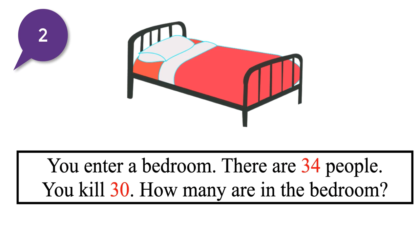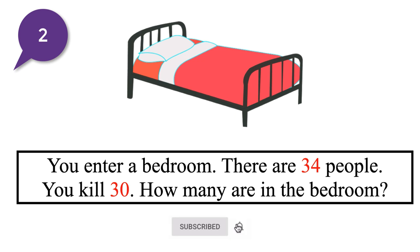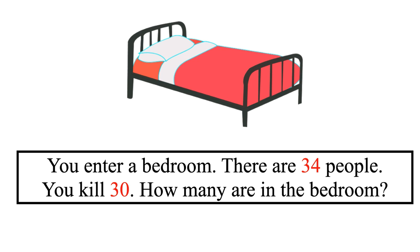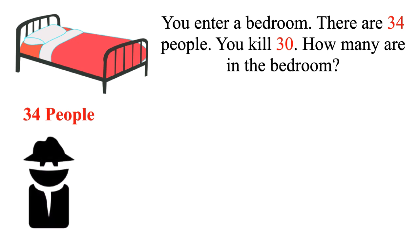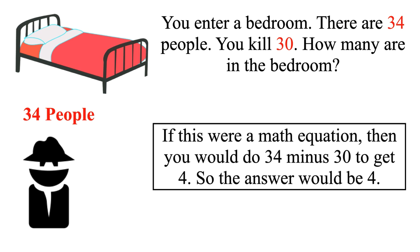You enter a bedroom — there are 34 people. You kill 30. How many are in the bedroom? If this were a math equation, you would do 34 minus 30 to get 4, so the answer would be 4.